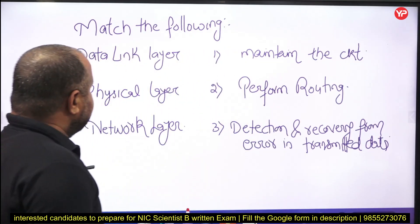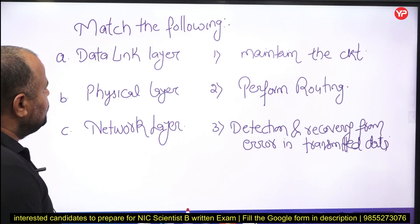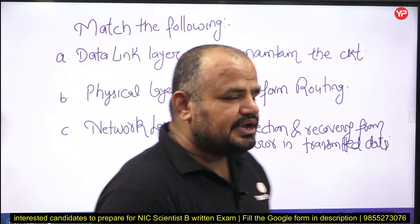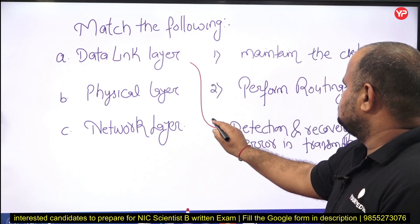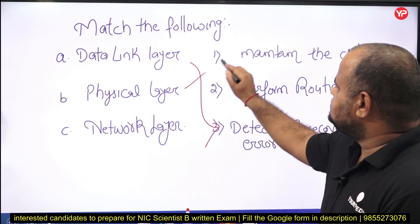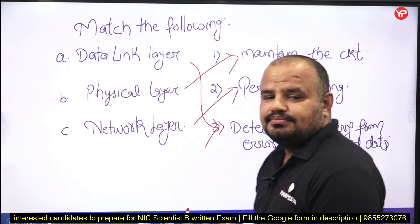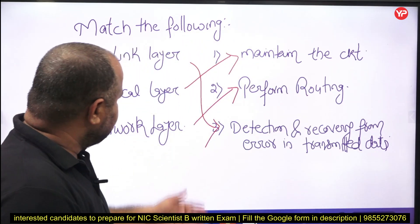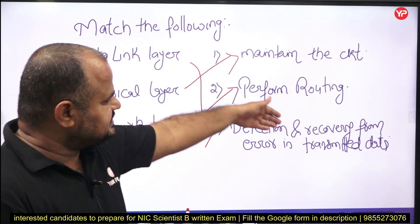The next problem is again a match-the-following: match the data link layer, the physical layer, and the network layer with their respective functionalities. The data link layer detects errors. The physical layer is used to maintain the circuit and network link. The network layer has a router and performs routing. These are the correct matches — each layer on one side, their functionality on the other.